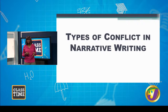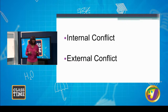Now we're going to look at the different types of narrative conflict. The two major categories are internal conflict and external conflict. And remember, when we're layering, you can include both.